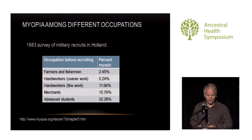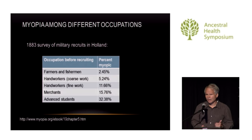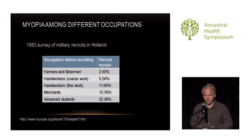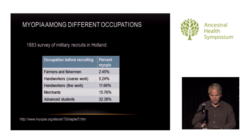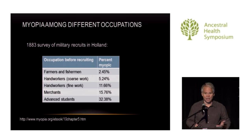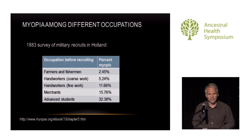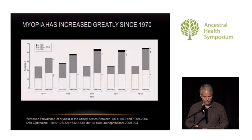Early studies on myopia — one from Holland in the 1880s looking at military recruits by occupation — showed that farmers and fishermen had about 2.5% prevalence, leather workers about 5%, fine hand workers like jewelers about 12%, merchants doing accounting and paperwork about 15%, and advanced students about a third. That was some indication of a relationship between the kind of activity you're doing and the incidence of myopia.